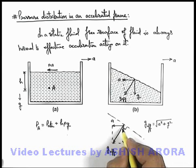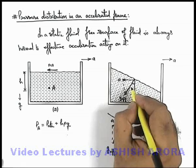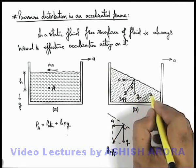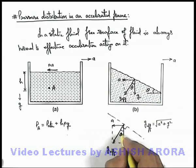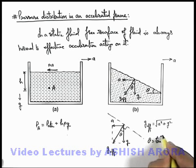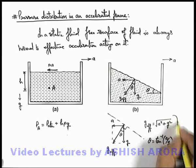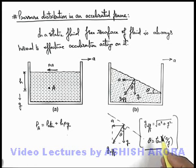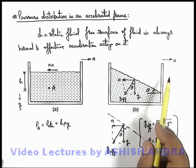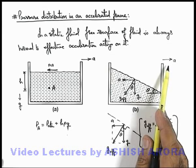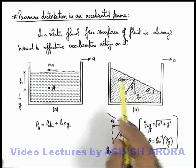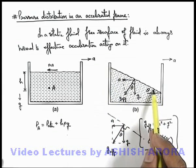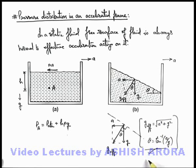If we wish to find the angle θ between the effective acceleration and the vertical, this is the same as the angle between the free surface of the liquid and the horizontal. This θ can be easily given as tan⁻¹(ay/g). Whenever a container is accelerated with horizontal acceleration ay, we can directly state that the free surface of the liquid within the container will become inclined at an angle tan⁻¹(ay/g) with the horizontal.